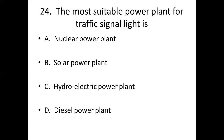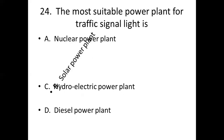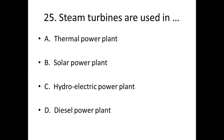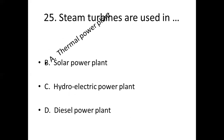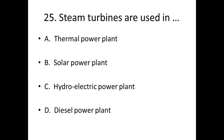Twenty-fourth bit. The most suitable power plant for traffic signal light is dash. Option A: Nuclear power plant. Option B: Solar power plant. Option C: Hydroelectric power plant. Option D: Diesel power plant. Answer: Option A, Thermal power plant.